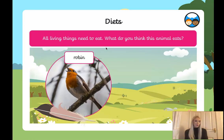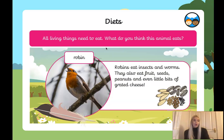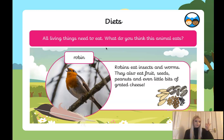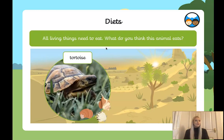Now we know all living things need to eat — what do you think a robin eats? A robin eats insects and worms, and also fruit, seeds, peanuts, and a little bit of grated cheese. Does that mean a robin is an omnivore, herbivore, or carnivore? A robin is an omnivore — it eats both plants and meat. Well done!